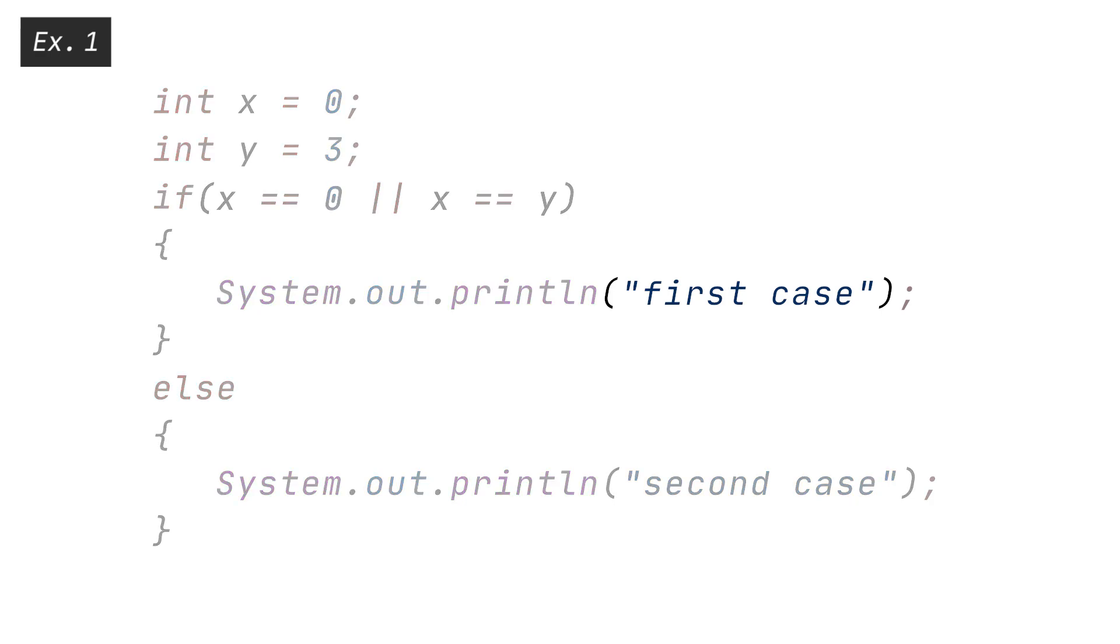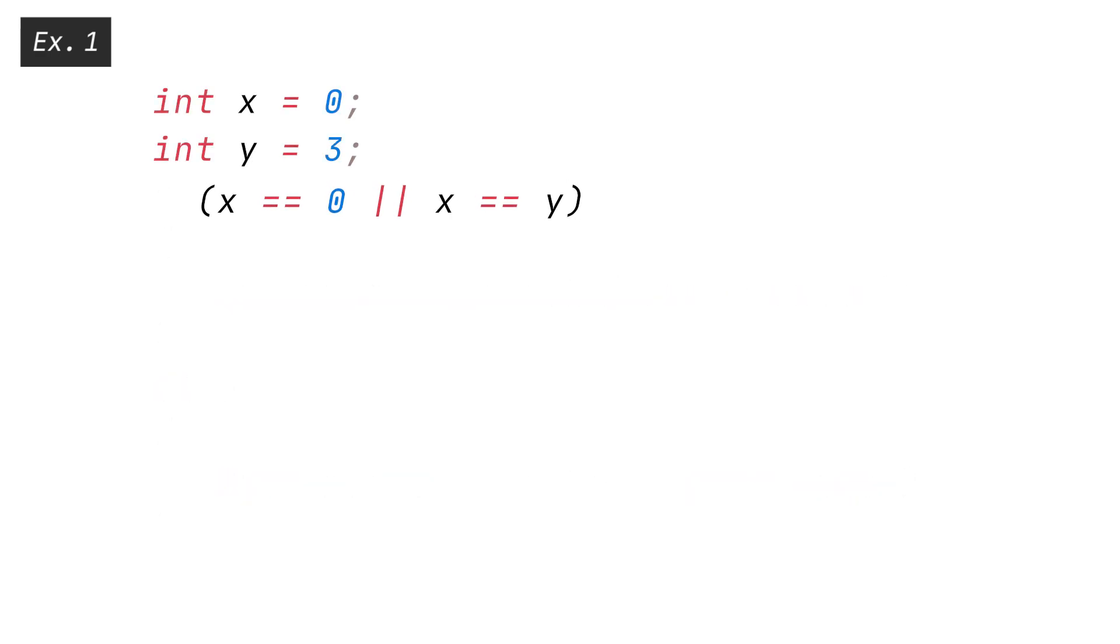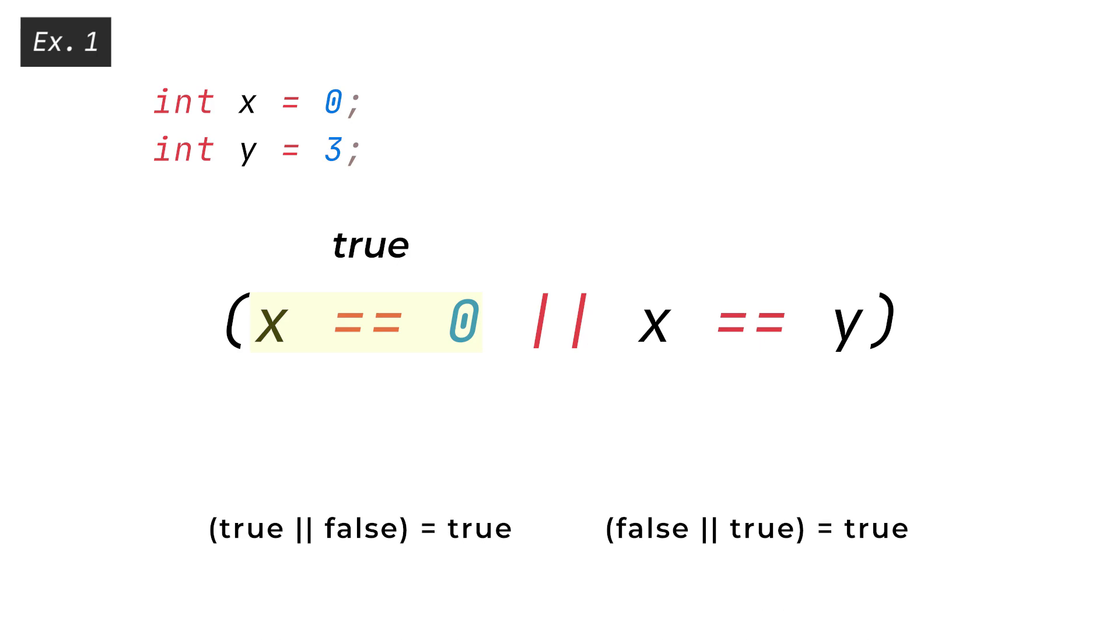The code would print first case, because the statement X equals equals 0 returns true, and in any OR-OR operation, only one side of the condition must be true. In this example, the OR-OR operator short-circuits, causing the right-hand side operand, X equals equals Y, to not be evaluated.